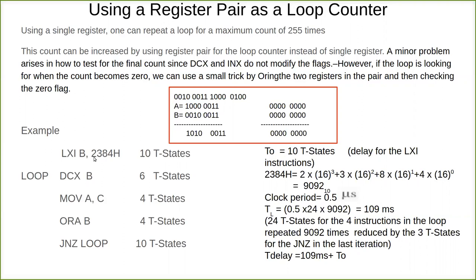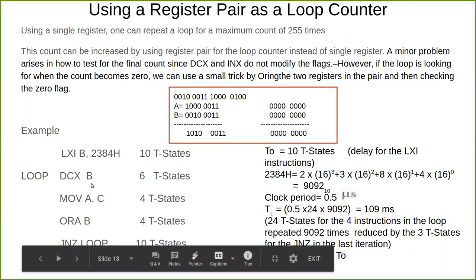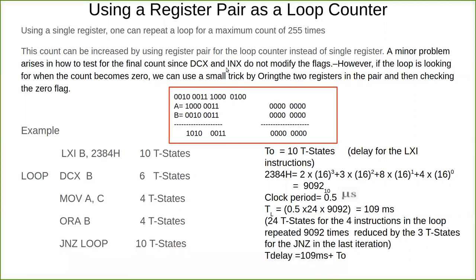In order to decrement a register pair, we have exclusive statements called DCX and INX. INX is used for incrementing the register pair whereas DCX is used for decrementing the register pair.